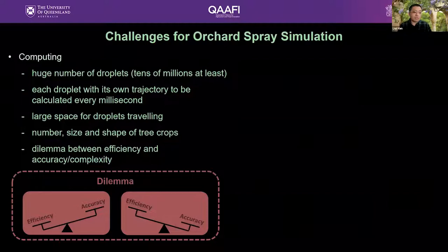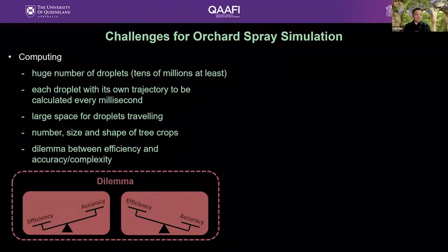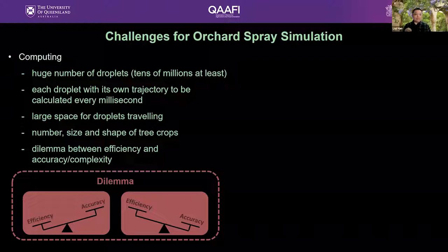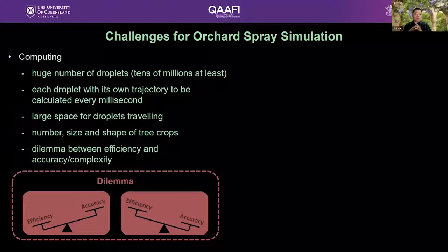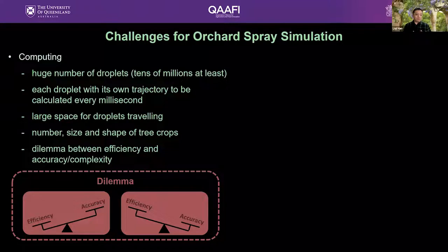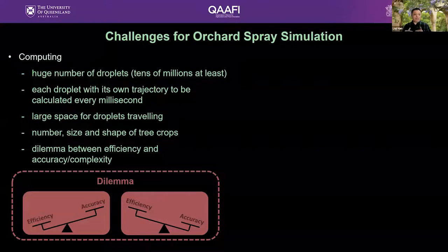For orchard spray simulation, a big challenge is in computing — we need to simulate at least tens of millions of droplets, and each droplet has its own trajectory over a long distance across a large space, to be updated every millisecond. We also need to respect the unique features of tree canopies; unlike many other crops, tree crops are unique in their shapes and an orchard layout also has unique features that we need to respect.